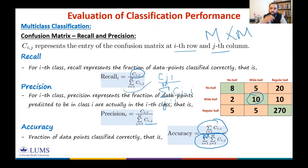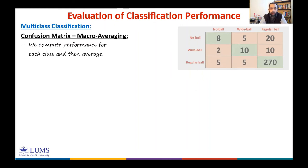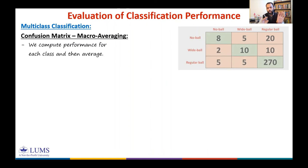Now let's combine the recalls and precisions for different classes into one value using macro-averaging or micro-averaging. Macro-averaging simply means: compute performance for each class, then take an average. For example, if you have four classes, compute four recalls and take their average. For each class, we can also construct a binary confusion matrix using the one-versus-rest formulation, which lets us define true positive, true negative, false positive, and false negative. We then compute recall and precision from each, and average them.